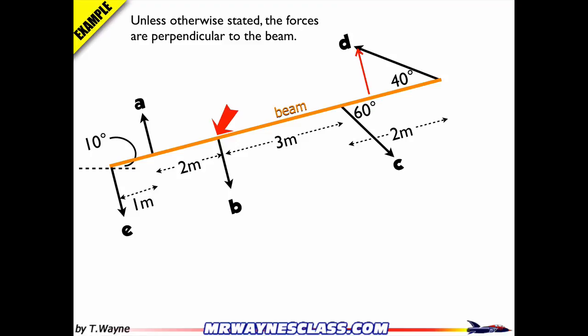To do this, I'll make D the hypotenuse of a right triangle and find the opposite side as D sine 40 and the adjacent side as D cosine 40.